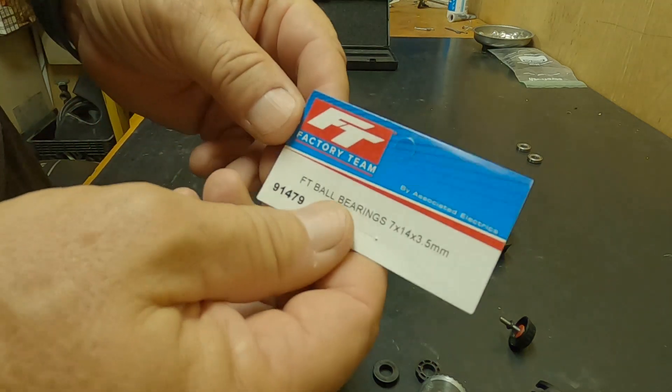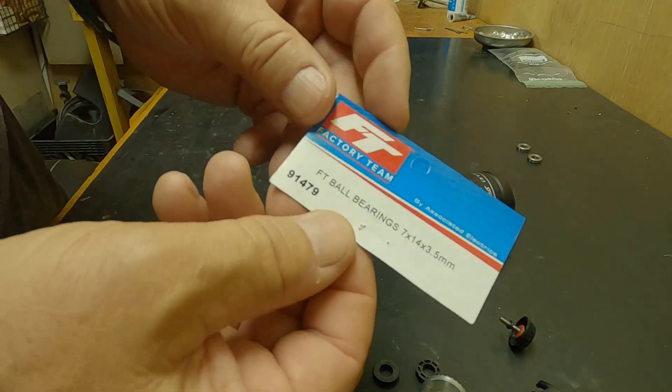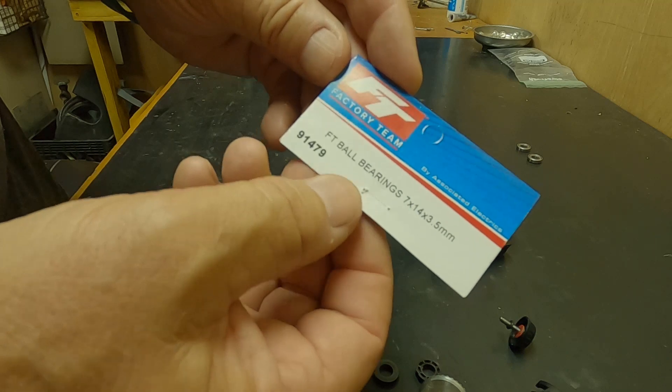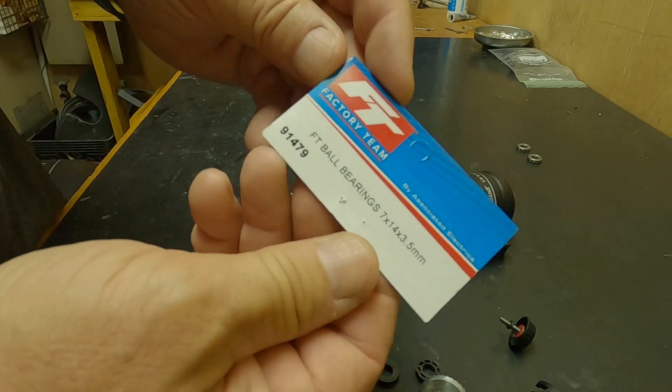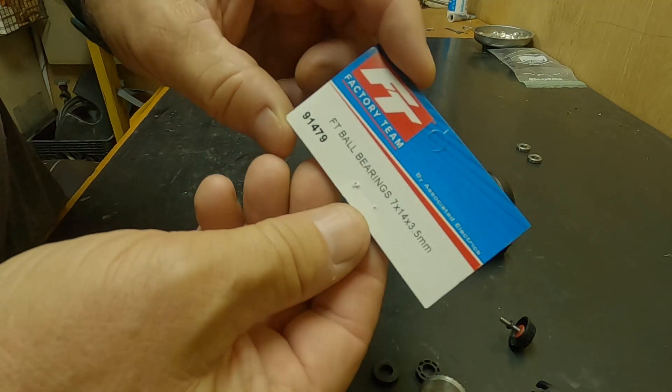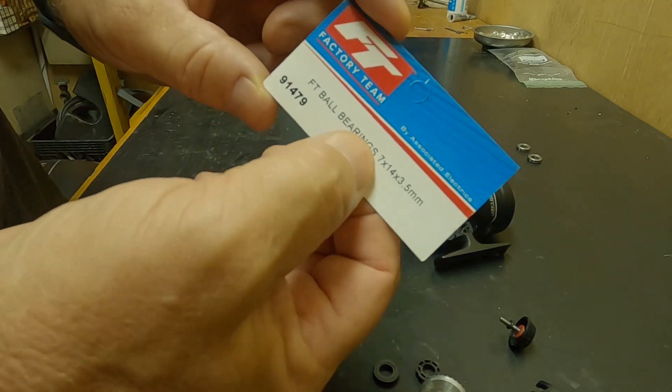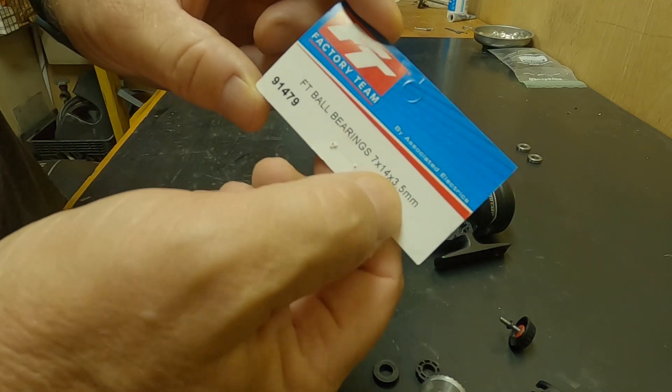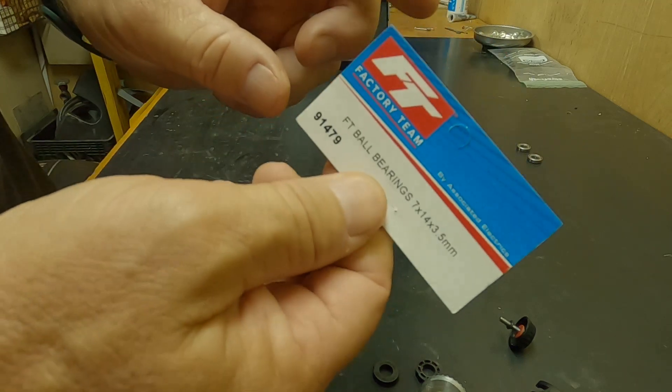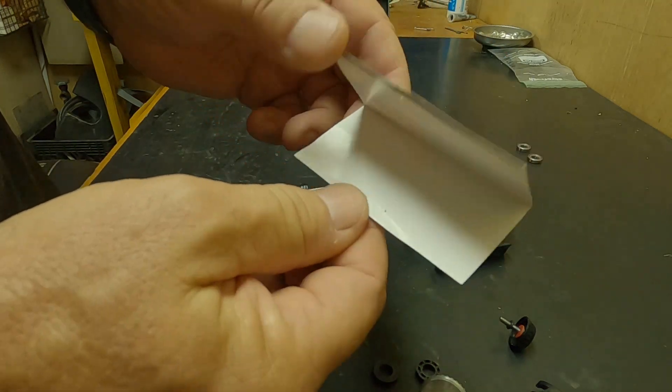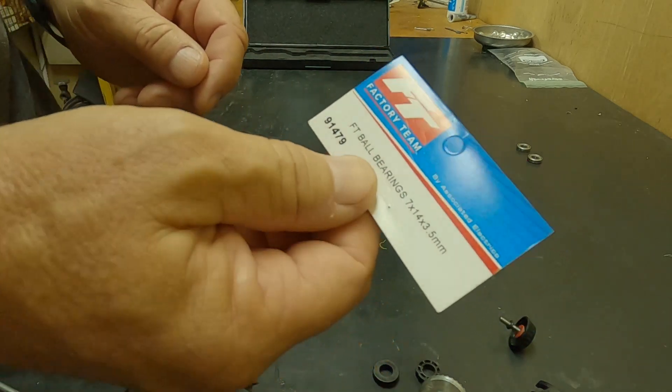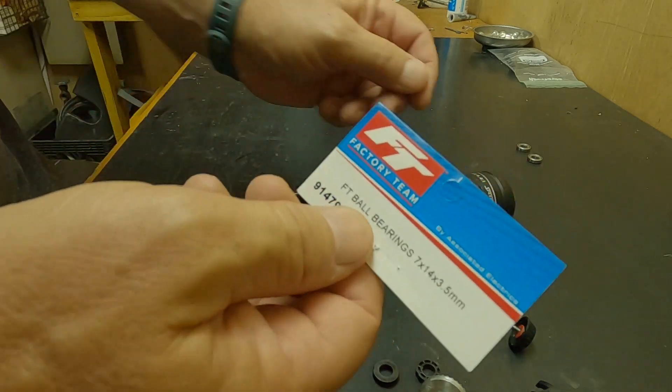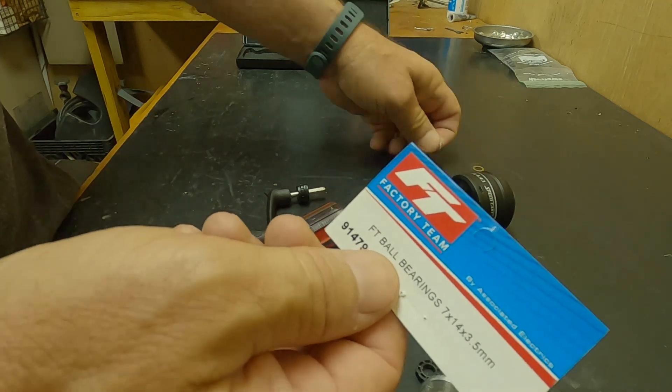Alright, so for $10 I found this Factory Team Associated Electronics, which is RC car. I found exactly what I was looking for: 7 by 14 by 3.5. Four bearings was like $10 on eBay from an RC racing shop called A-Team.